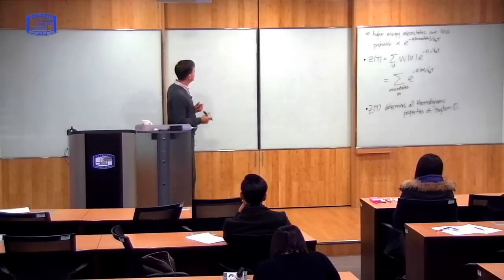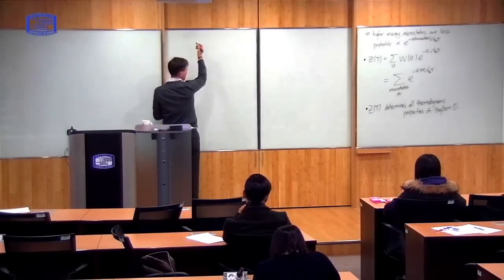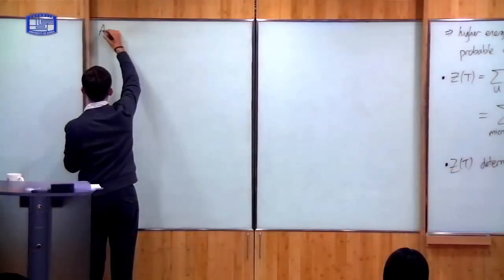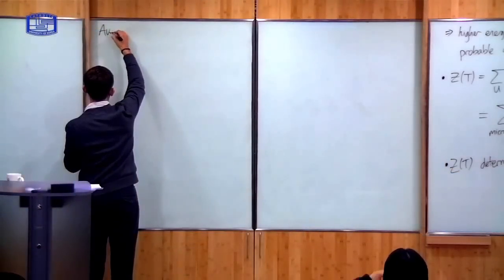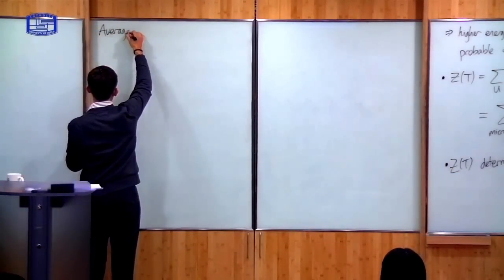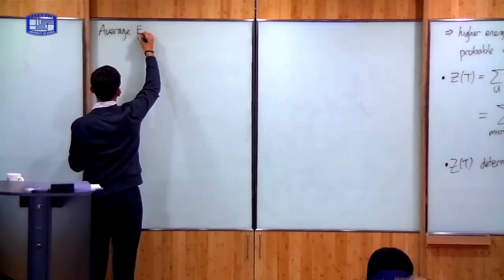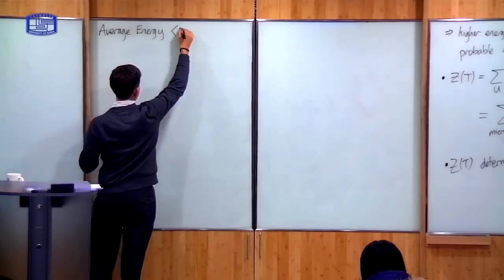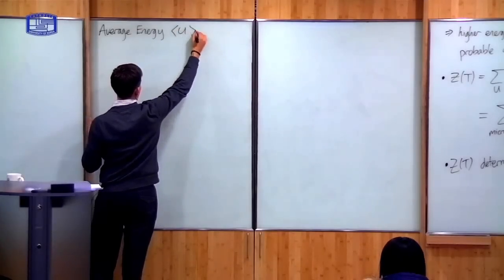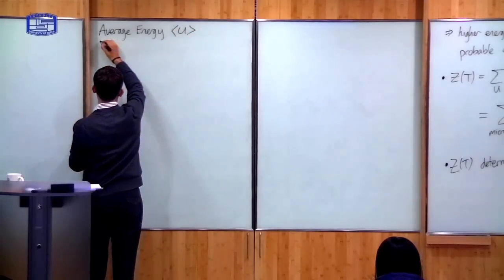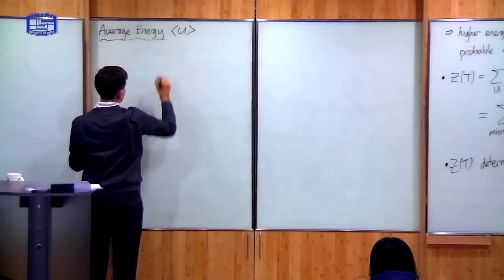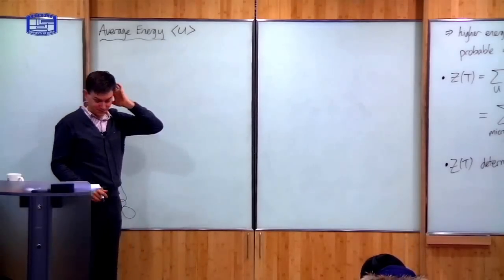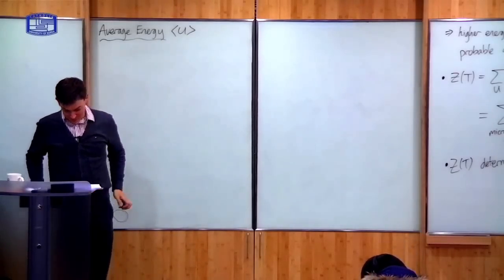But you must always remember that although I write it like this, we're always considering this system in contact with another thermal reservoir at thermal equilibrium. In what follows, I will forget about the reservoir in that I won't write subscript 1 — I'll just write U and W. But it means the same thing. Right, so what kind of thing can we calculate from Z? An example of something we can calculate is the average energy — the mean energy, U.